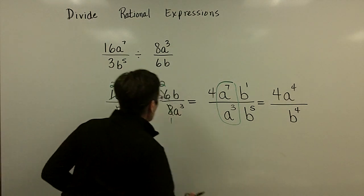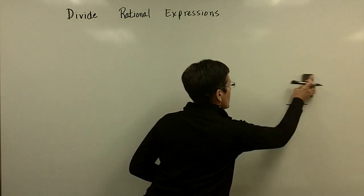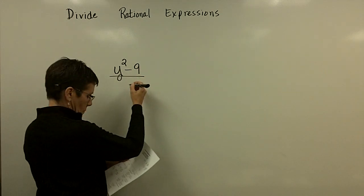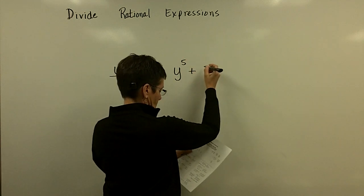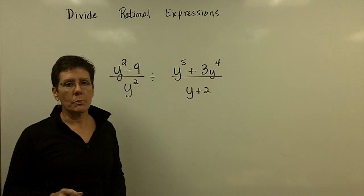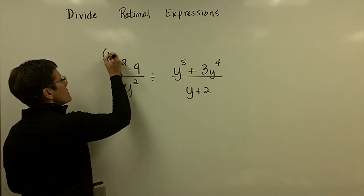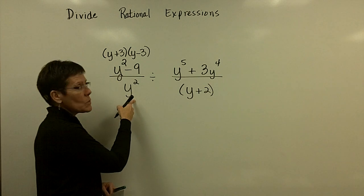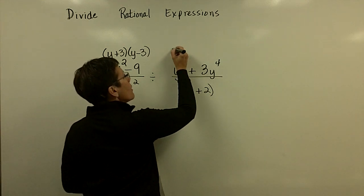We call this division but we end up doing a lot of factoring. Let's take a look at the next problem. With a division problem I tend to factor everything first and then flip the second fraction. This factors as y plus three and y minus three. The other expression has a greatest common factor of y to the fourth, so pulling that out requires a y and a three inside.